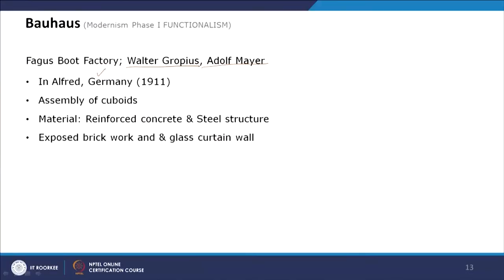Now let us discuss the Fagus Boot Factory, also designed by Walter Gropius along with Adolf Meyer, located in Germany. It is again an assembly of different cuboids. The material was reinforced concrete, steel structure, and exposed brick. The brick was not painted — the color of the brick was used as the material and as its aesthetic value. Glass curtain wall was also used with properly transparent glass. Exposed brick was again followed in later stages of modernism in brick Brutalism, and Fagus Boot Factory is one example of this.